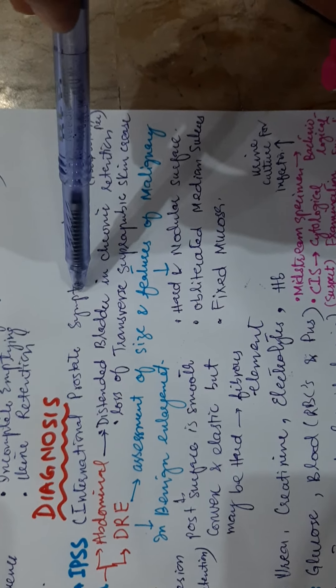Ultrasonography is done to check the size of the prostate and post-void volume, which is the residual urine of the bladder, which should normally be less than 50 ml. If it is more than 100 ml, then it represents bladder outflow obstruction.